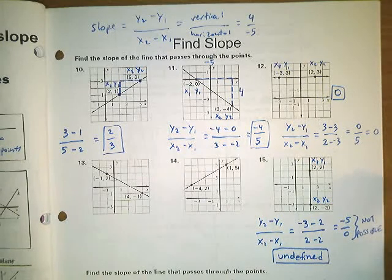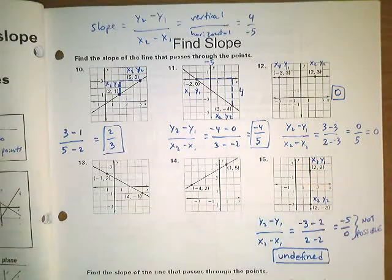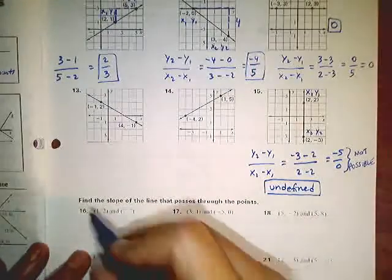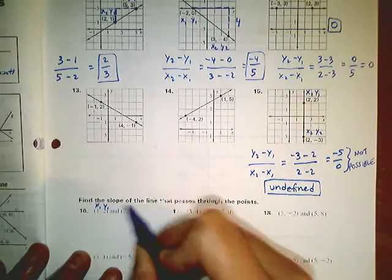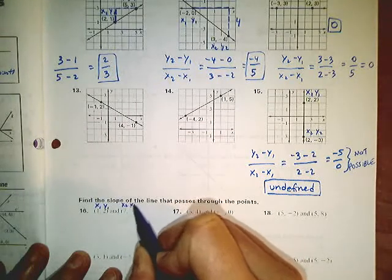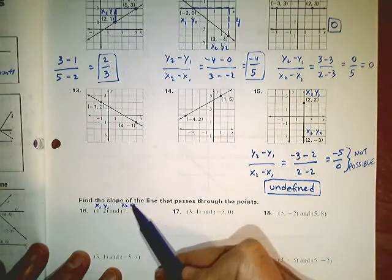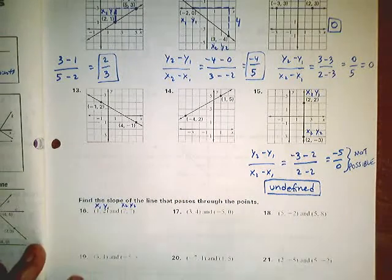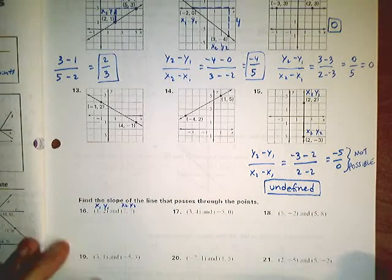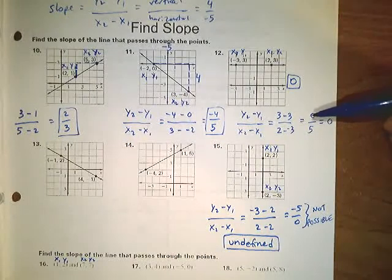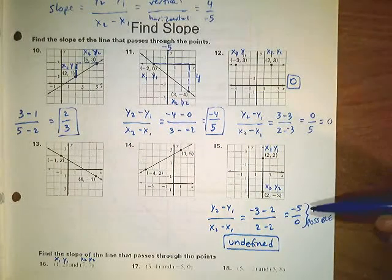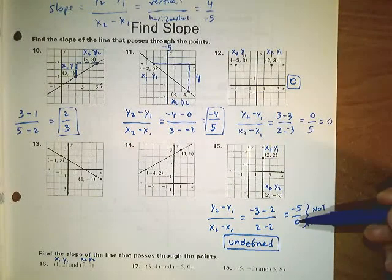At the bottom of the page, you can identify each one of these points as x sub 1, y sub 1, and x sub 2, y sub 2, and then use the slope formula. Just think about what happens when you come up with a 0 value: if the 0 value is on the top, the answer is 0; if the 0 value is on the bottom, your answer is undefined.